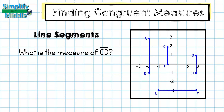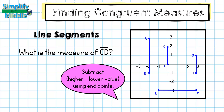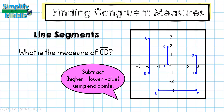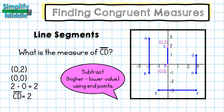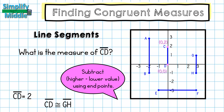There's another strategy I can use for finding the measure of a line segment on a coordinate plane. This time for line segment CD, I'm going to be subtracting the higher and lower values using their endpoints. C is at (0, 2) and D is at (0, 0). I notice they have the same x-coordinate, so I'm just going to subtract the y-coordinates to find the distance. So line segment CD has a value of 2, and that means line segment CD is congruent to line segment GH.